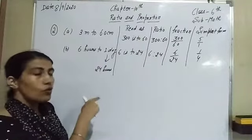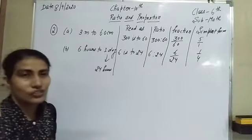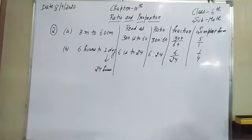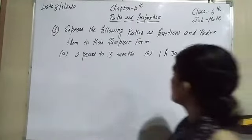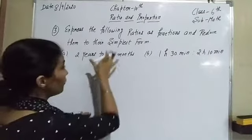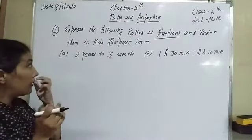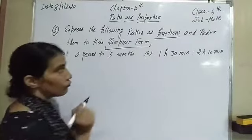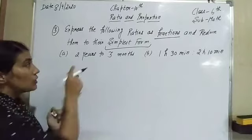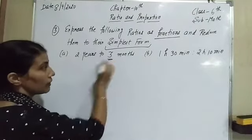In a similar way you have to solve the remaining parts of this question. Now the next question: express the following ratios as fractions and reduce them to their simplest form. Firstly here is 2 years to 3 months.